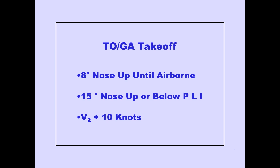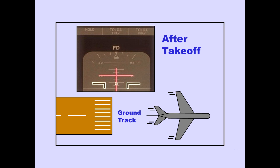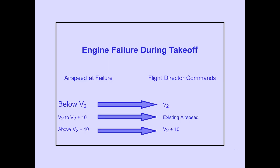As climb rate increases, pitch commands change to maintain the MCP IAS mode window speed plus 10 knots. This speed is V2 for takeoff. After takeoff, the TOGA roll mode commands a heading to maintain the ground track which existed during the takeoff. Should an engine failure occur during takeoff below V2, the flight director commands V2. If the failure occurs between V2 and V2 plus 10, the flight director maintains existing airspeed. If airspeed is above V2 plus 10 at the time of failure, the flight director will maintain V2 plus 10.